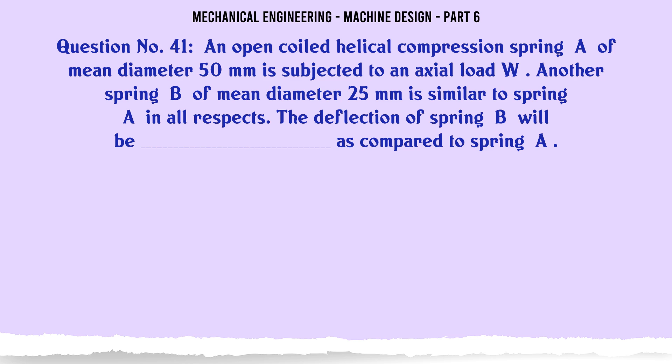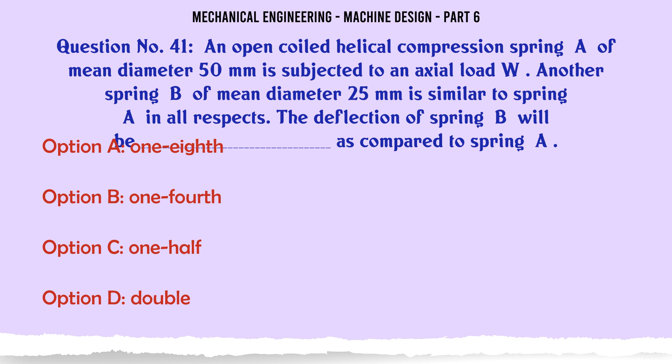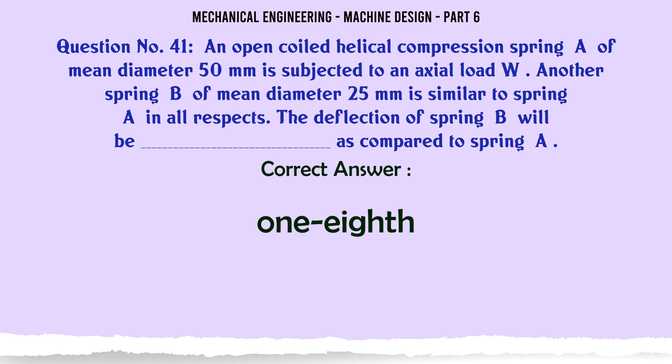An open coiled helical compression spring A of mean diameter 50 mm is subjected to an axial load W. Another spring B of mean diameter 25 mm is similar to spring A in all respects. The deflection of spring B will be as compared to spring A: A) one eighth, B) one fourth, C) one half, D) double. The correct answer is one eighth.